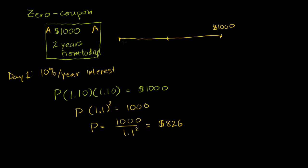So if we have 1,000 divided by 1.1 squared, that's equal to $826. So if you were to pay $826 today for this bond, and in two years that company would give you back $1,000, you will have essentially gotten a 10% annual compounded interest rate on your money.